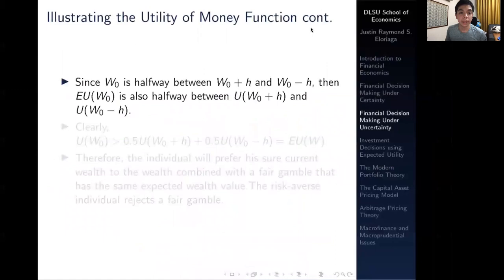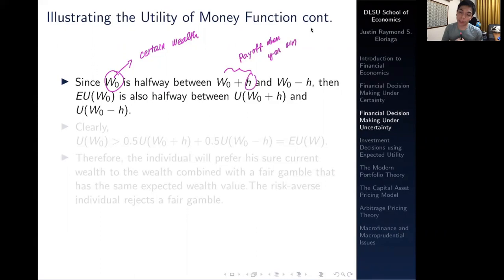Since W₀—and just to recall, W₀ is like a certain wealth—so suppose a consumer doesn't engage in the gamble, he or she will automatically have W₀. W₀ is halfway between W₀ + H, which is the payoff when you win the gamble, so your wealth increases by H, and if you lose the gamble it's W₀ - H, so this is a negative payoff when you lose.